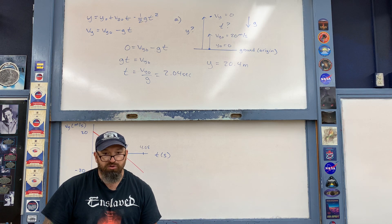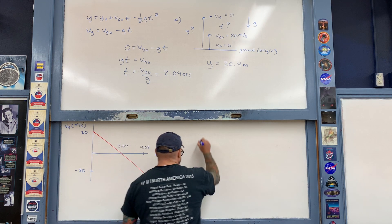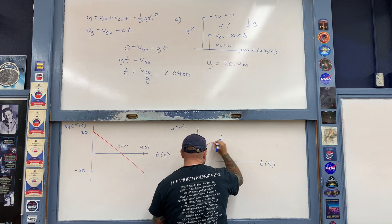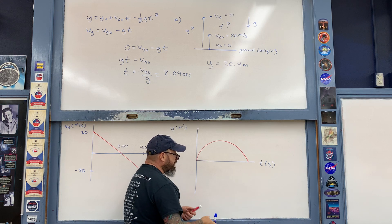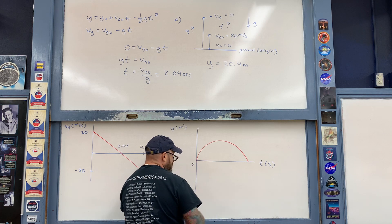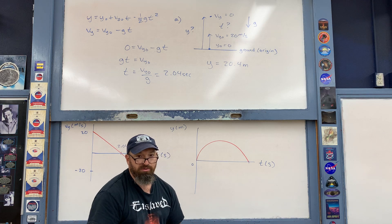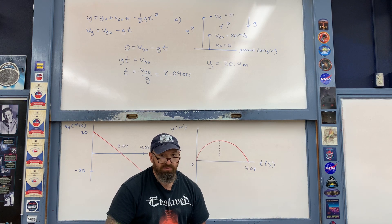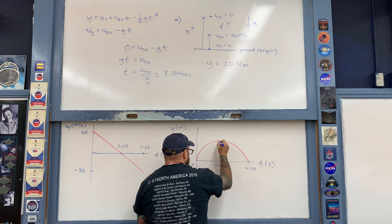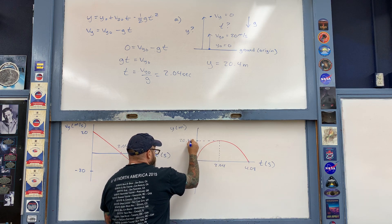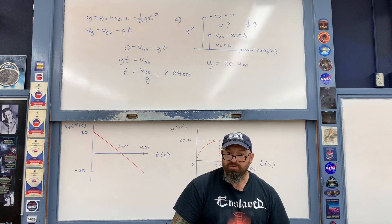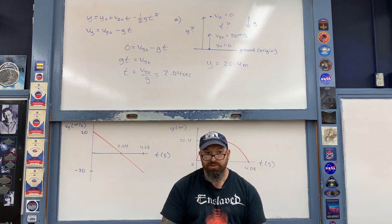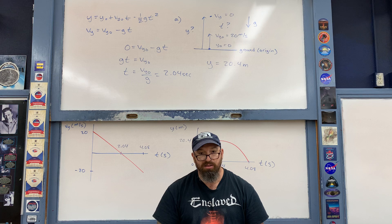The position as a function of time is described by a parabola. The clock starts at t equals zero; the object reaches maximum height at the vertex of the parabola at 2.04 seconds with a maximum height of 20.4 meters, and returns to the ground at 4.08 seconds total. These graphs illustrate the basic symmetries in position and velocity as functions of time for free fall problems. This concludes the basic examples for free fall for this class.